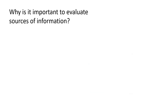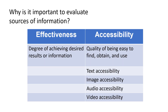Why is it important to evaluate the sources of information? It is important to evaluate the information you will use and look for its effectiveness and accessibility. When we say effectiveness, it is the degree of achieving the desired results or information — does it have the correct information you are looking for? When we talk about accessibility, we talk about the quality of being easy to find, obtain, and use. Is the information easily accessible? Can it be easily read? Does it have photos, audio, or video which we can use to verify information?